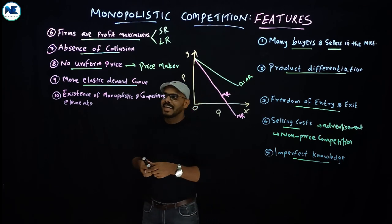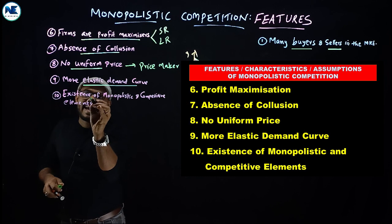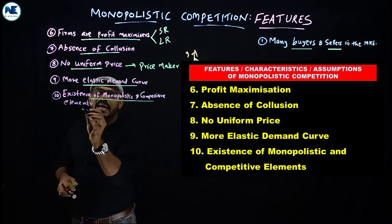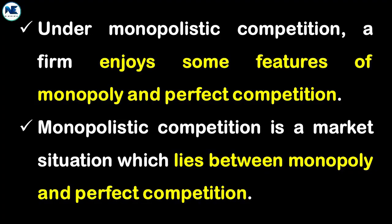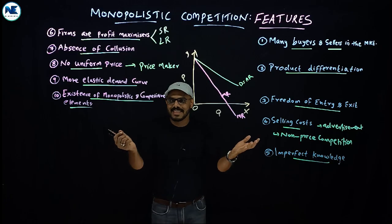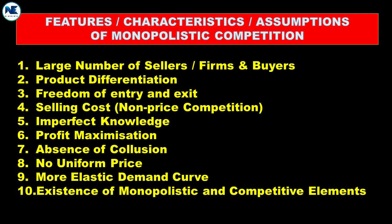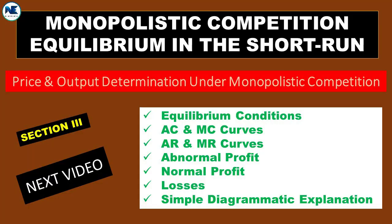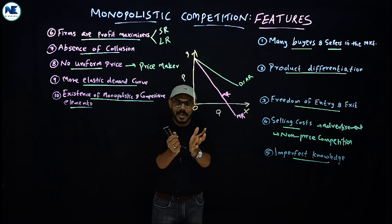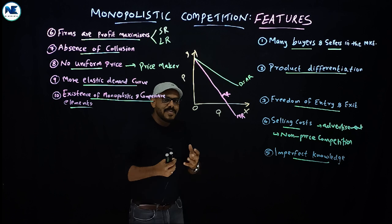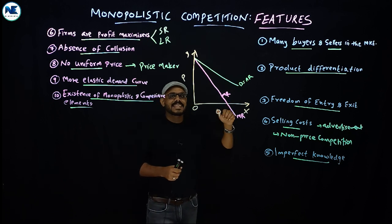The last point is the existence of both monopolistic and competitive elements — that is why it is known as monopolistic competition. It is the combination of monopoly as well as perfect competition. In the coming video, we will discuss equilibrium conditions in both short-run and long-run monopolistic competition in a simple way. Have a nice day — happy learning!